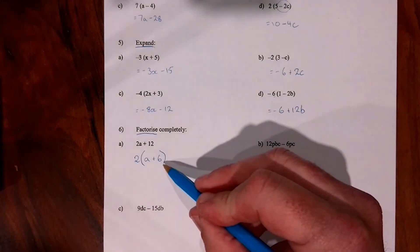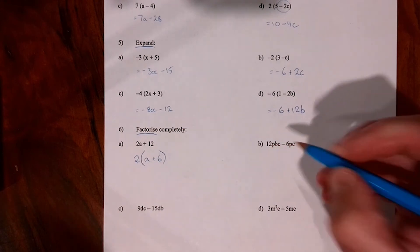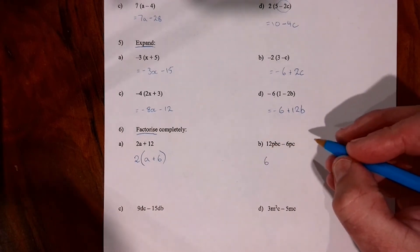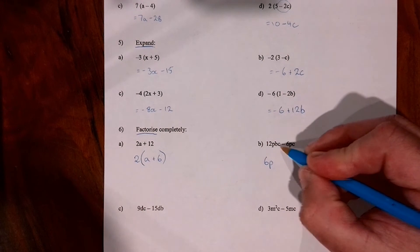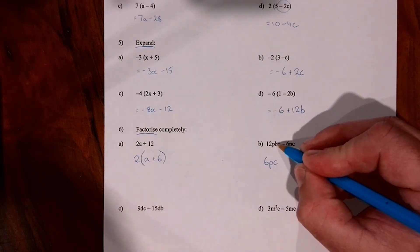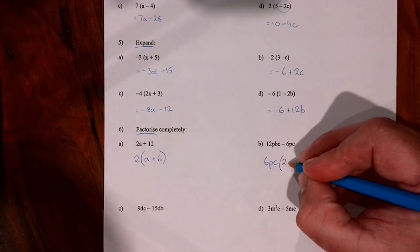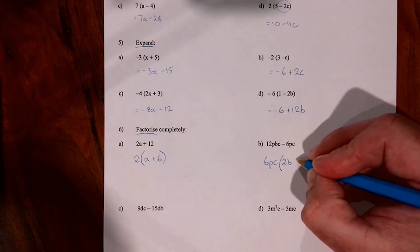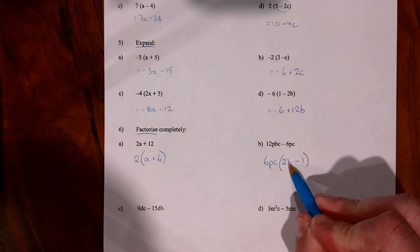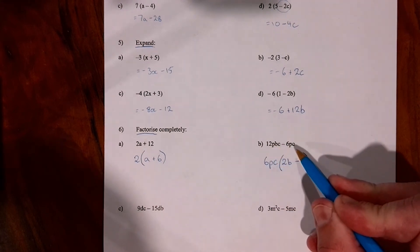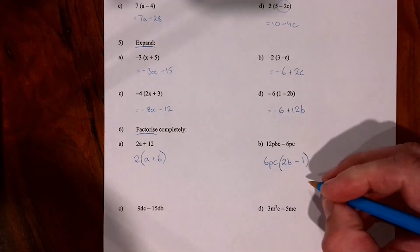Question 6b is less simple. We look for numbers to take out the front: 6 goes into 6 once and into 12 twice, so we take 6 out. Then we check for common letters: p's appear in both terms so p goes out, and c's appear in both so c goes out. The b must stay inside the brackets — giving 2b for the first term and minus 1 for the second. Check: 6pc times 2b makes 12pbc, and 6pc times minus 1 makes minus 6pc. Correct.